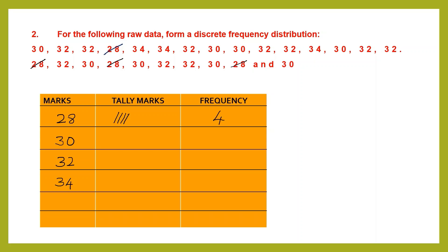Let's go to 30. We have one in the first row, then one more, one more, and one more in the first row itself. In the second row we have one more — that's the fifth one. When you have the fifth tally mark, you draw it diagonally across all four lines to make a bunch of five. Then there is 30 again, and two more — so a second bunch starts with three marks. The first bunch is five and the second is three: five plus three is eight. It is easier to count when they are in bunches.